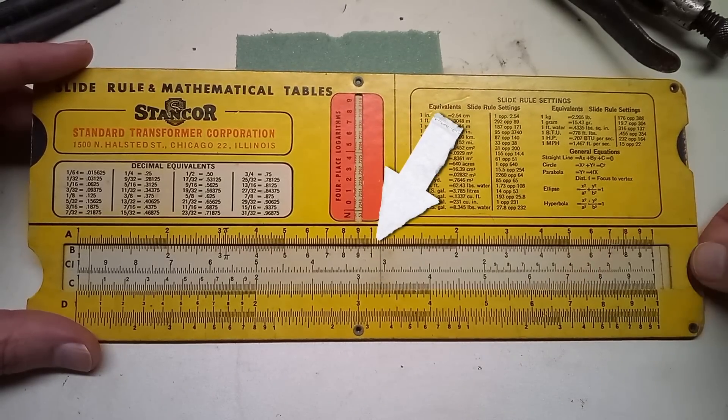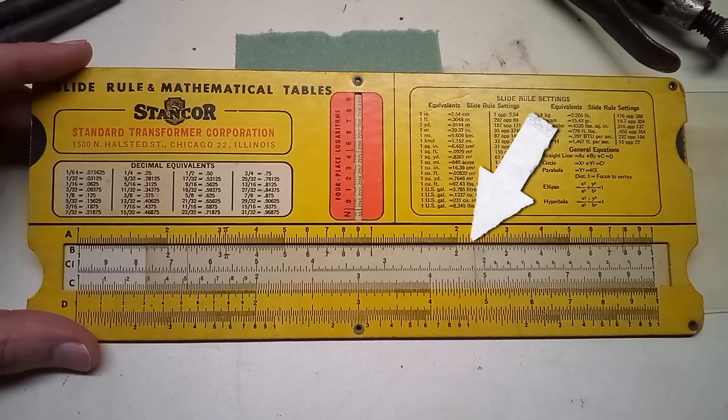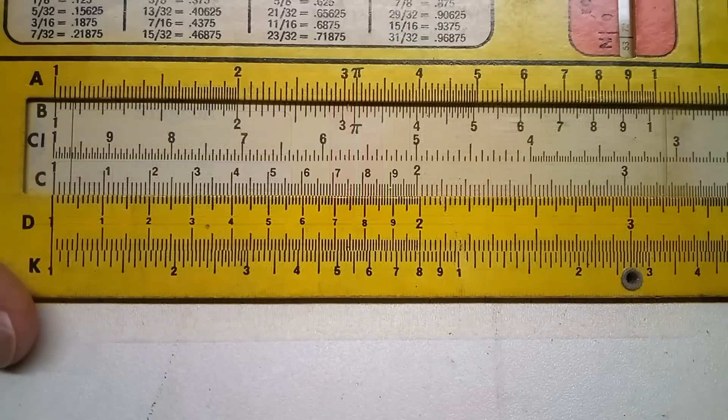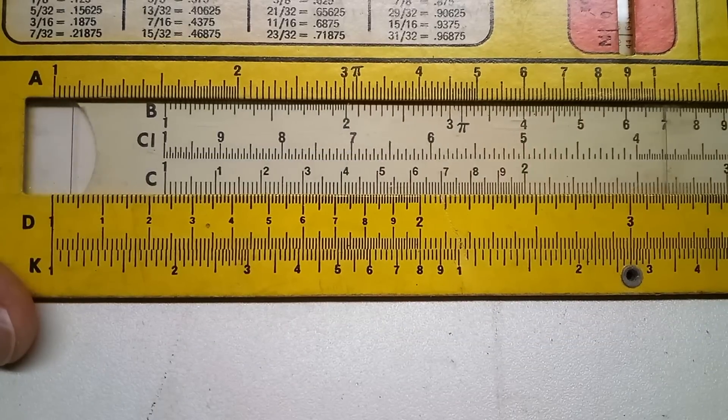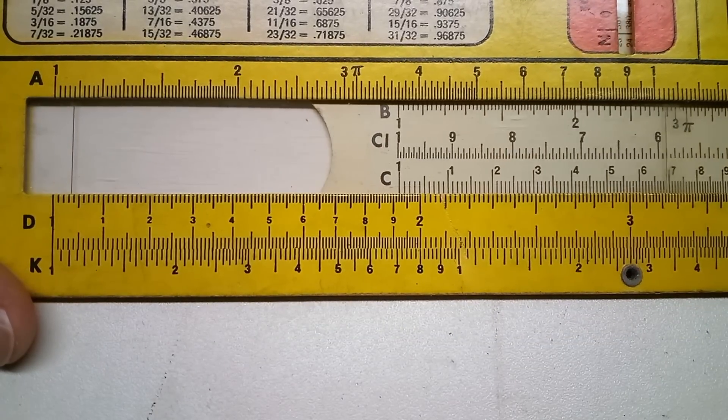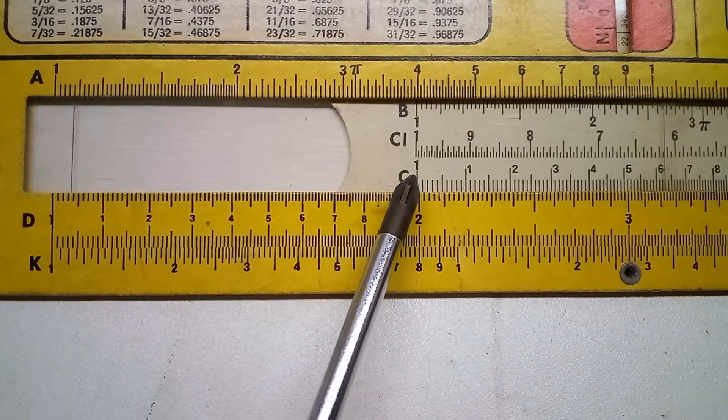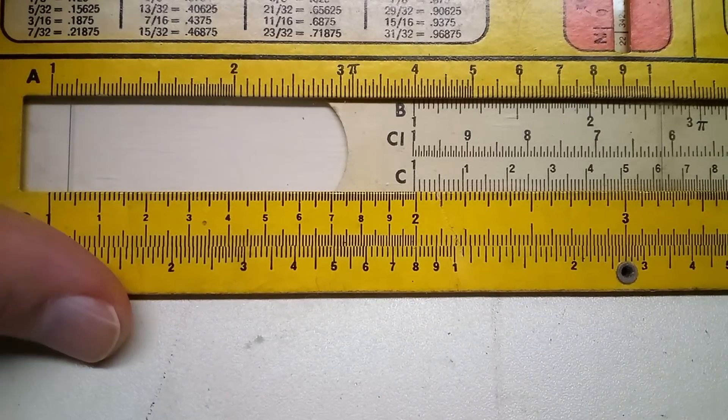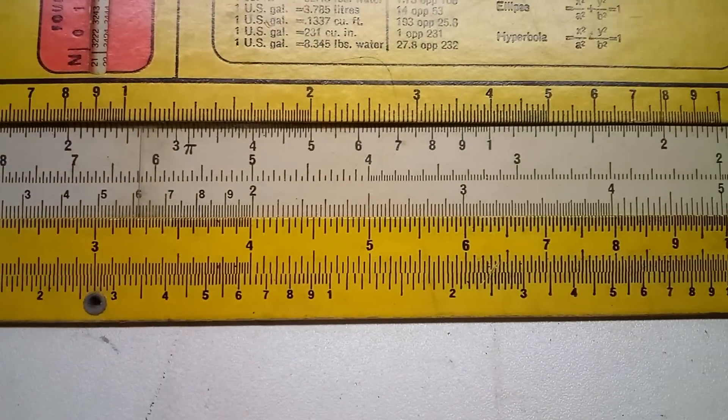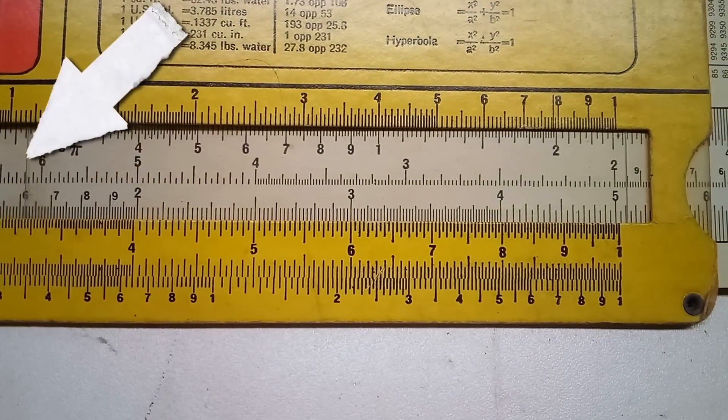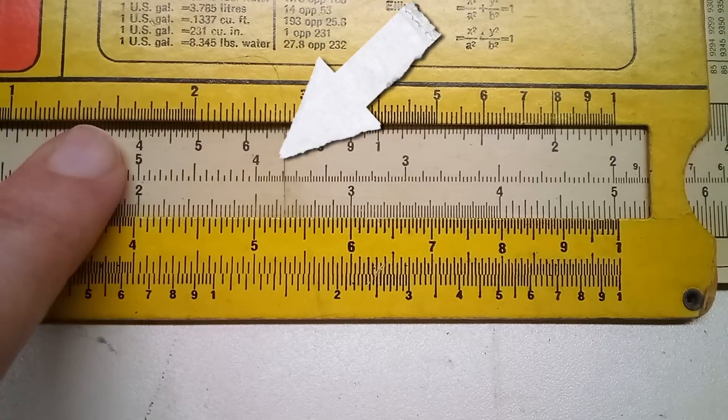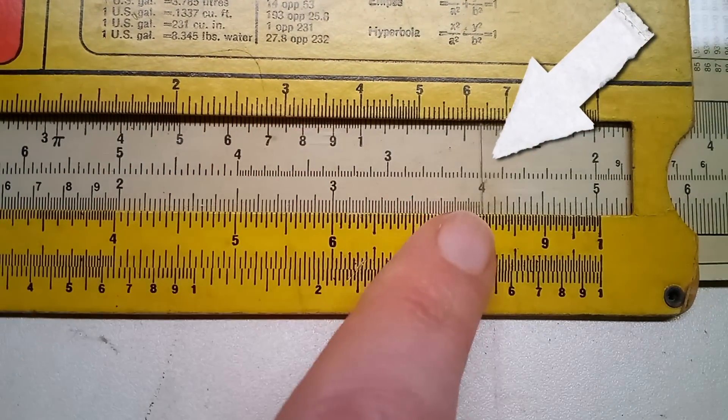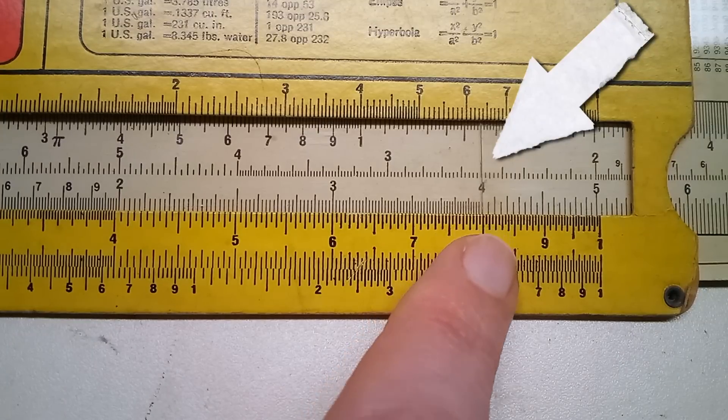So to use this, if we wanted to multiply 2 times 4, we would slide the slip stick so the 1 on the C scale lines up with the 2 on the D scale. Then we'll slide our cursor to line up with the number we want to multiply by—the 4 on the C scale. Then we follow the cursor line down and the number it's pointing to on the D scale is our answer: 8.